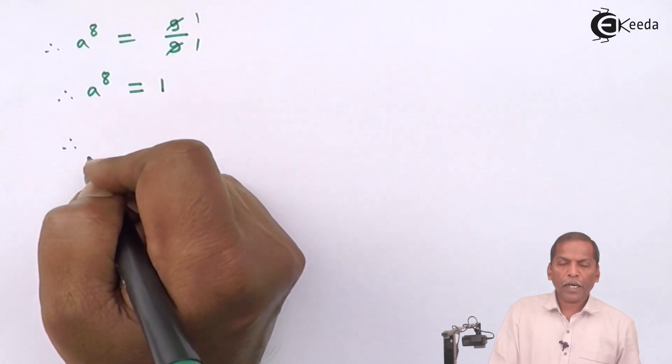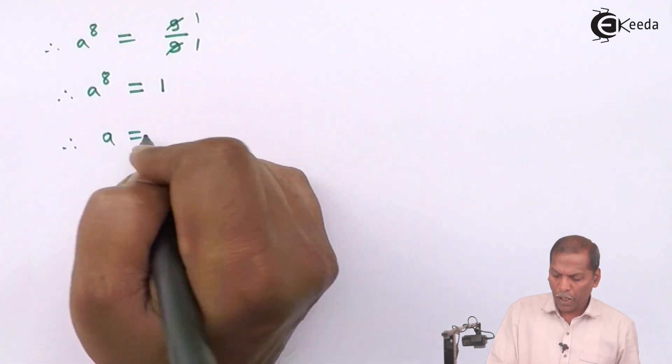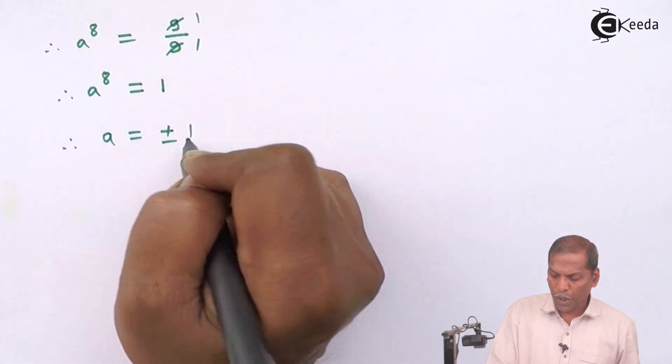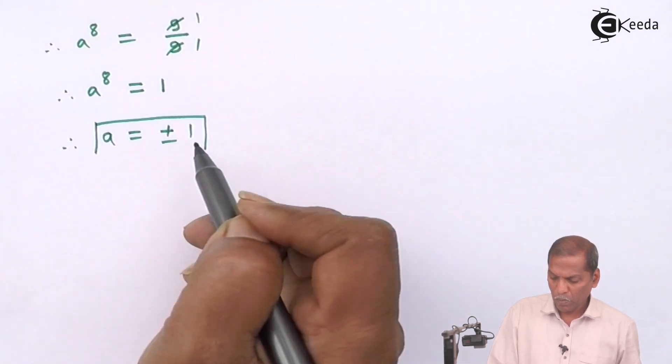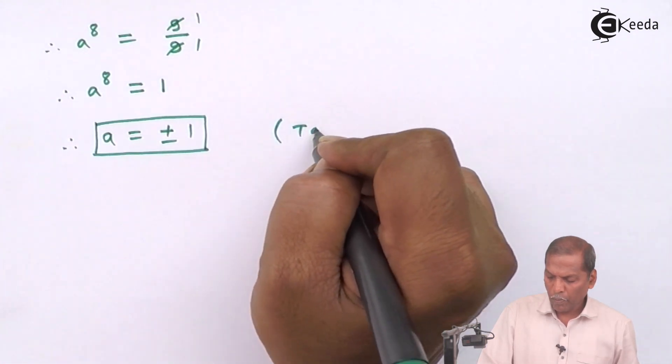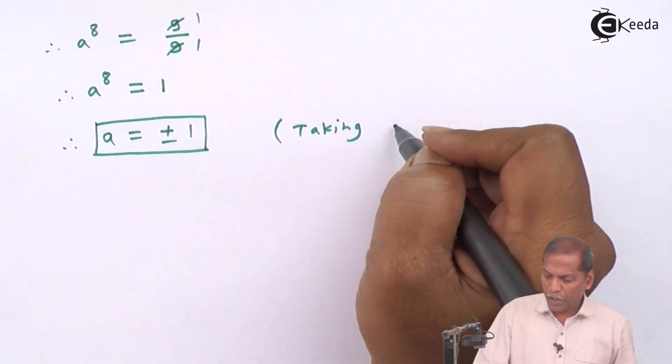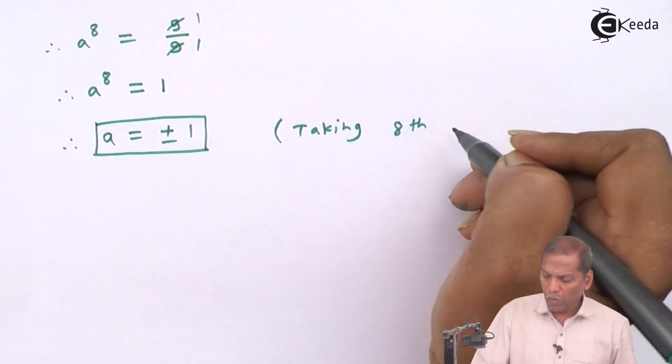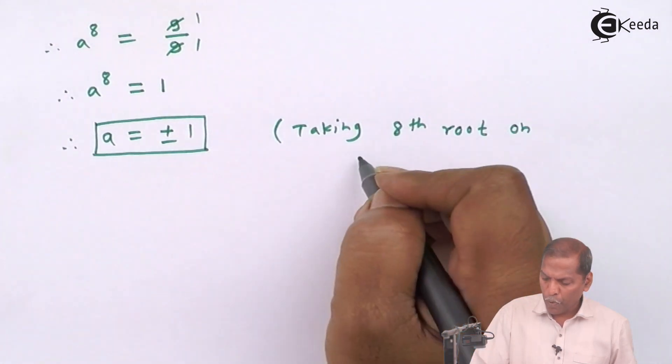And finally taking 8th root, we get a is equal to plus or minus 1. Taking 8th root on both sides.